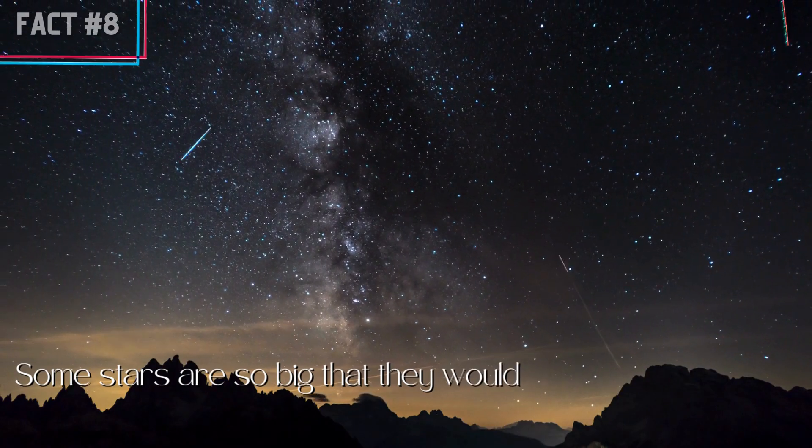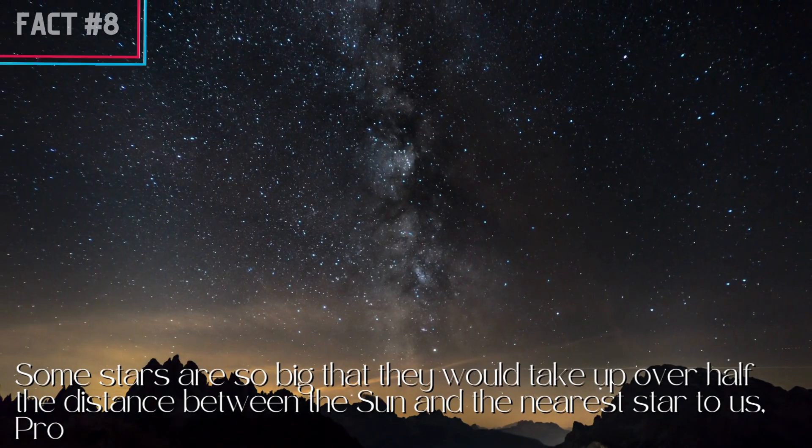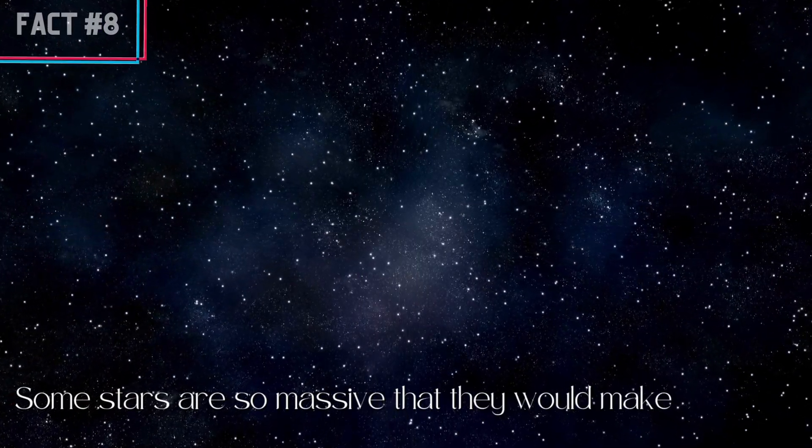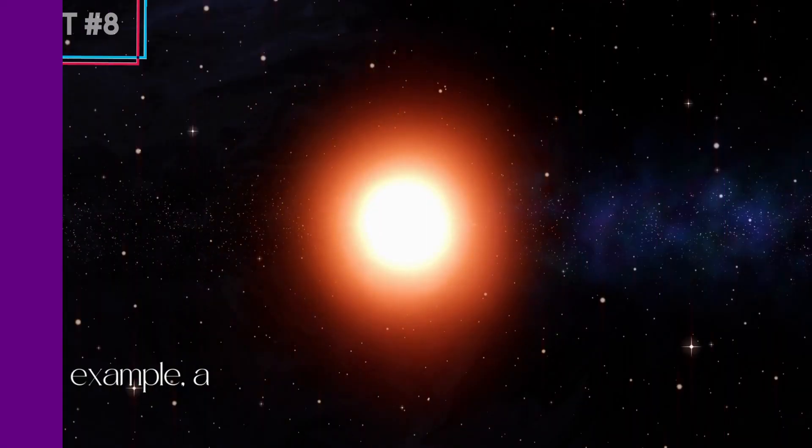Fact number 8, some stars are so big that they would take up over half the distance between the sun and the nearest star to us, Proxima Centauri. Some stars are so massive that they would make our sun look like a tiny speck in comparison. For example,